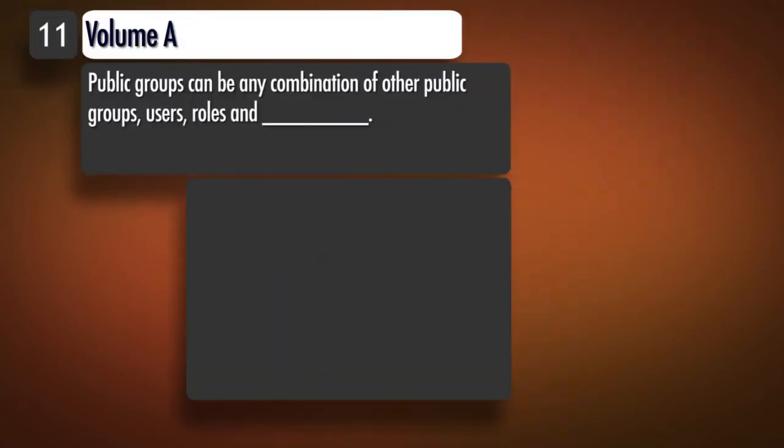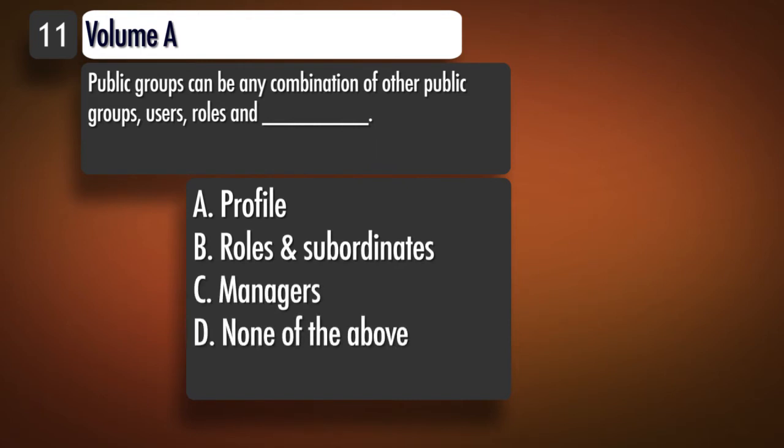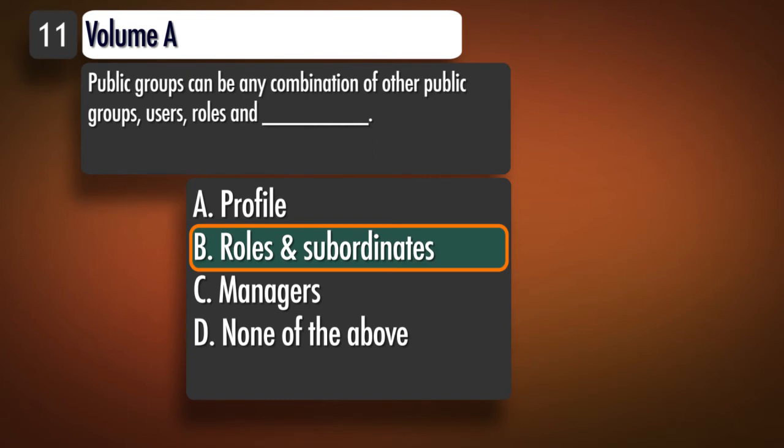Question 11, Topic 1: Public groups can be any combination of other public groups, users, roles, and — A. Profile. B. Roles and subordinates. C. Managers. D. None of the above. Correct answer: B.